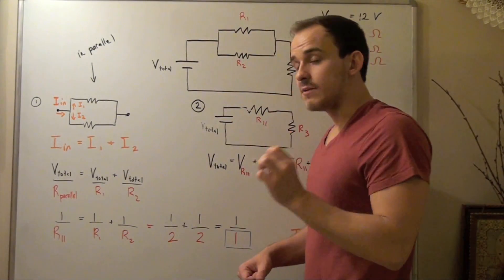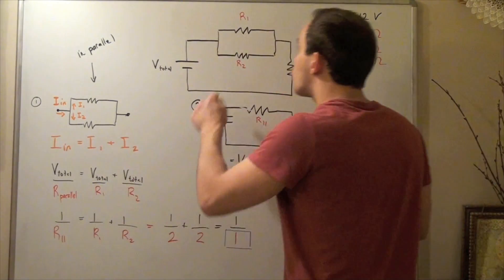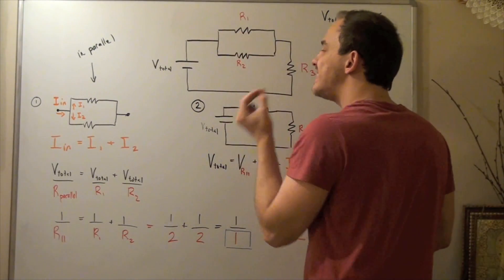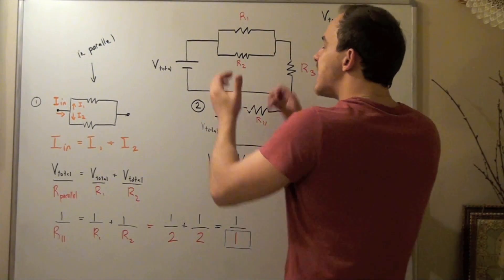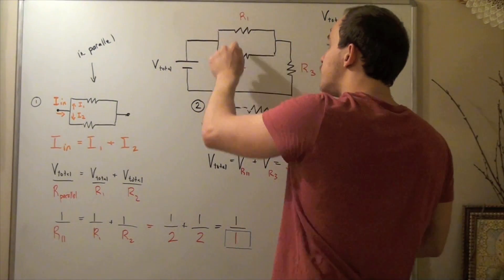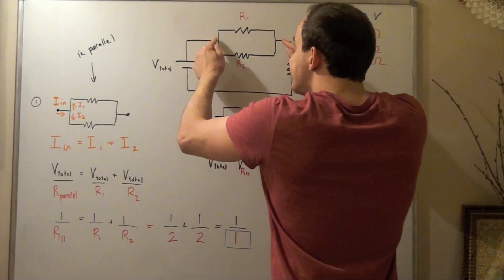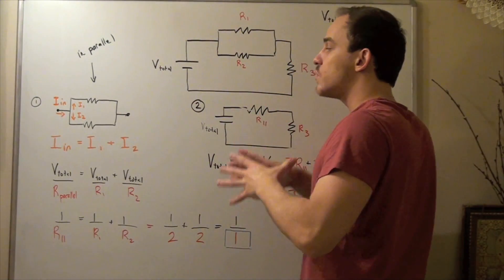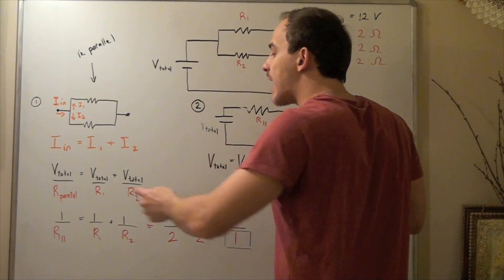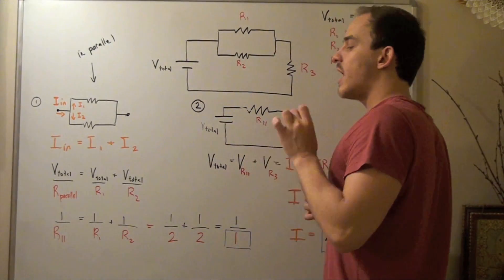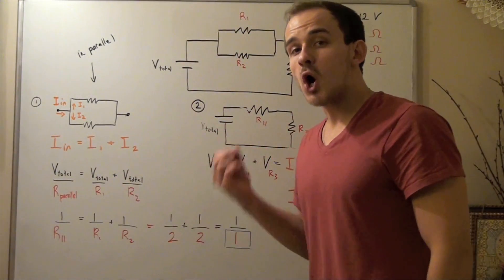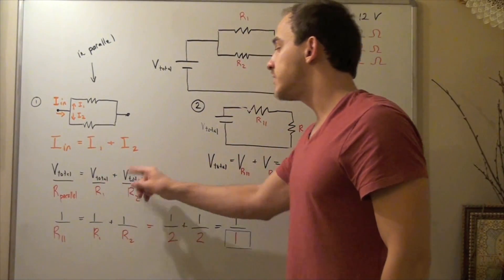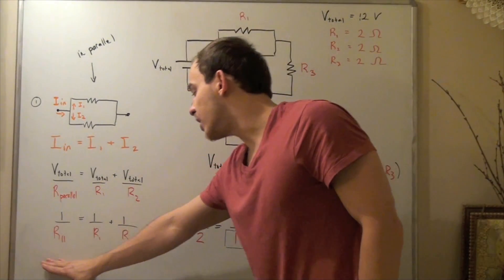I in is simply V total divided by R parallel, equals V total divided by R1 plus V total divided by R2. Recall that our V across these two is the same as the voltage across our battery. That's because our electric field is constant on both sides and our distance separating them is also the same, and that's exactly why our voltage will remain constant.